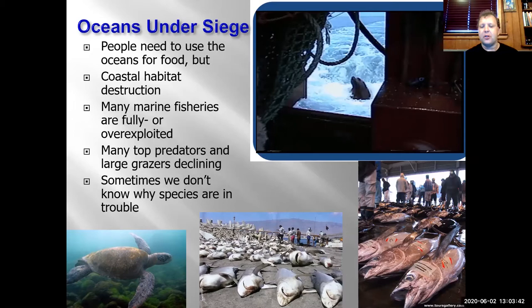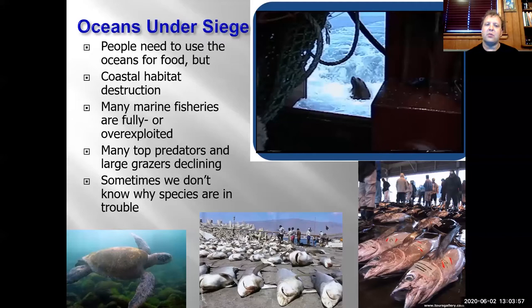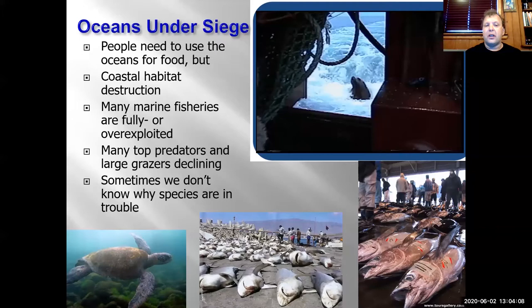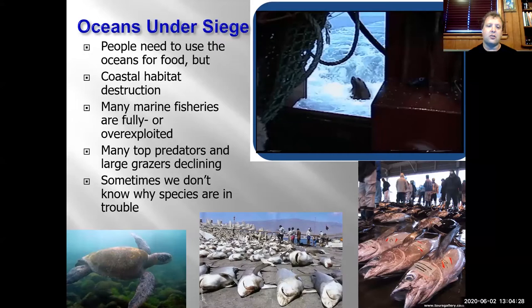Unfortunately, our oceans are struggling around the world. We take a lot of things out of the oceans for food, and we interact with the oceans in many ways. Everybody likes to live near the oceans, so we have a lot of habitat destruction. Many of our fisheries are either fully or overexploited — taking out pretty much as much as we possibly can, or maybe even more than what's sustainable, so every year that fishery operates the population gets a little bit lower and closer to extinction.